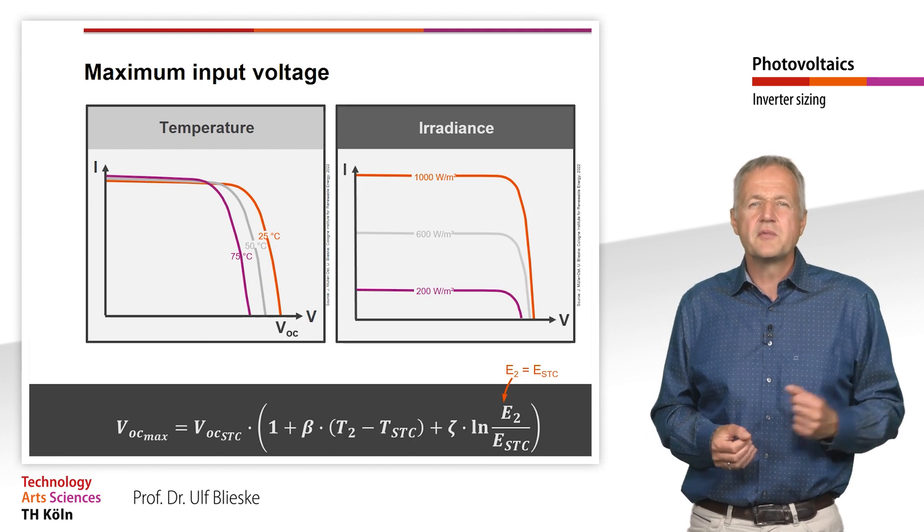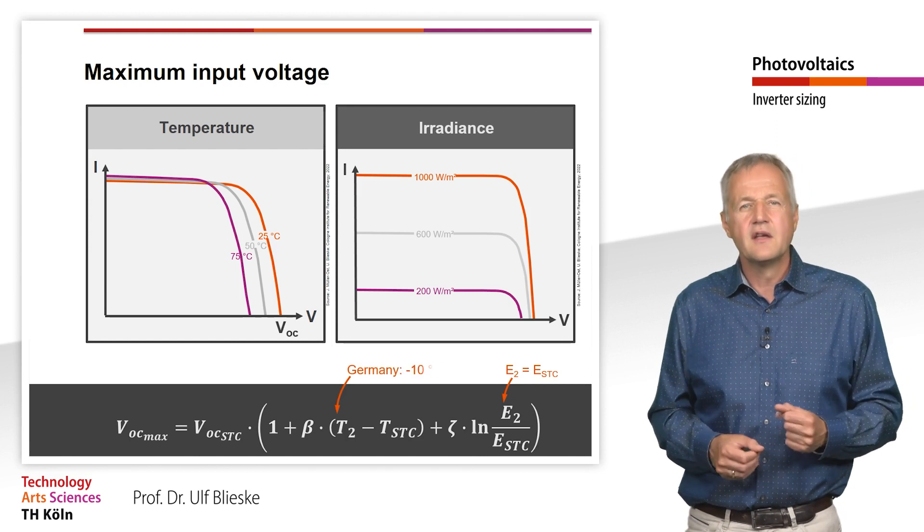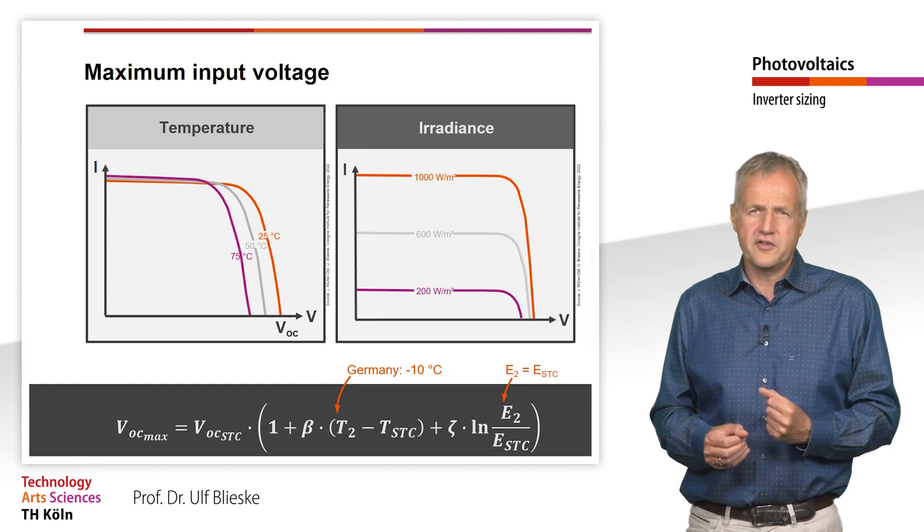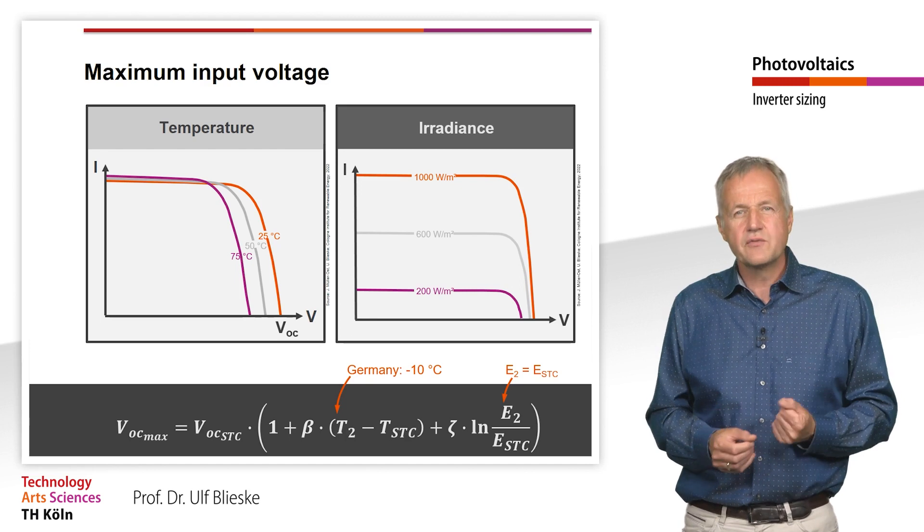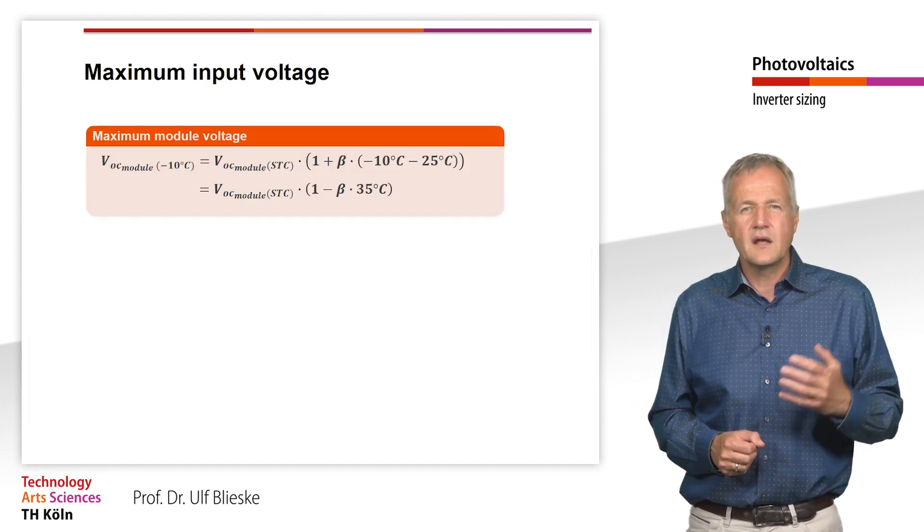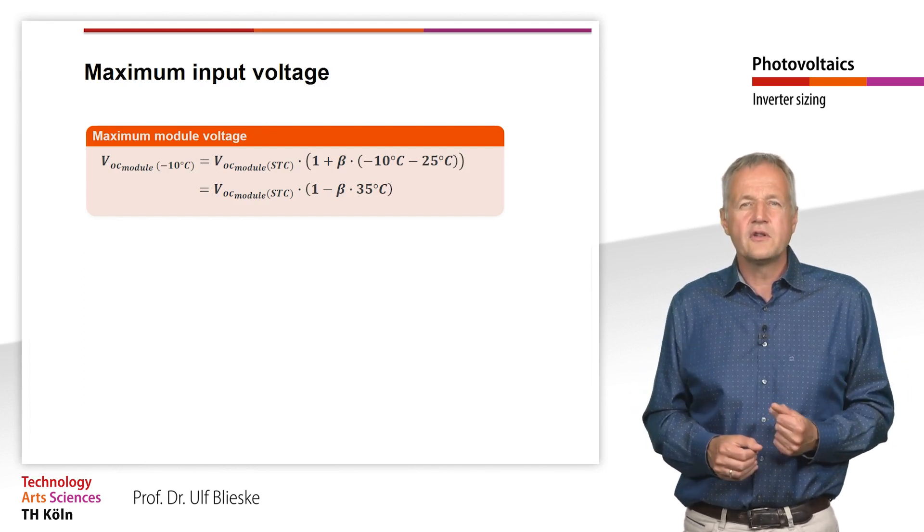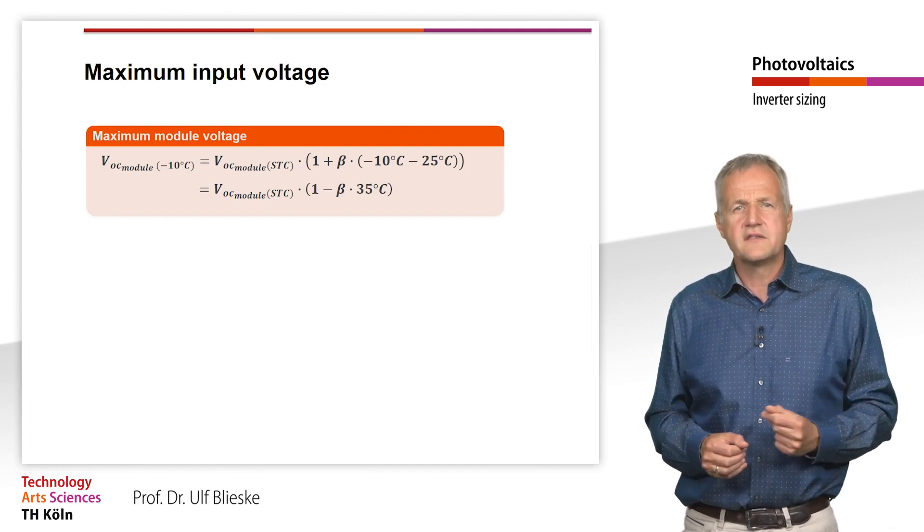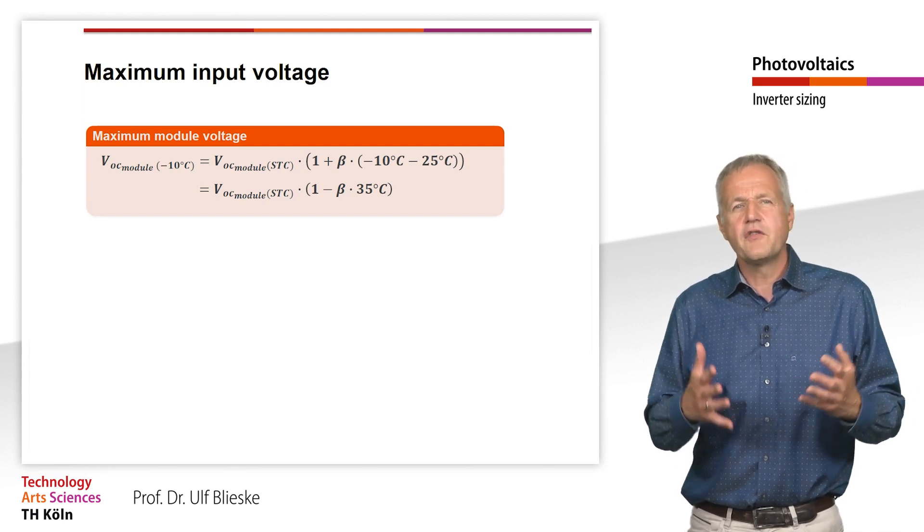For the temperature, a minimum temperature of minus 10 degrees is usually assumed for a plant in Germany. Depending on the location, however, lower temperatures are also possible. For a plant in Helsinki in the north of Europe, a temperature of minus 20 degrees Celsius should be expected. In order to calculate the highest expected open circuit voltage for a specific solar module, we need the open circuit voltage at STC conditions as well as the temperature coefficient beta. Both values can be found in the datasheet of a solar module.